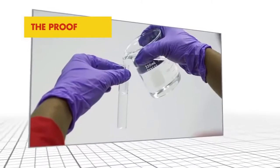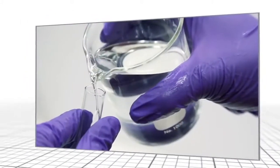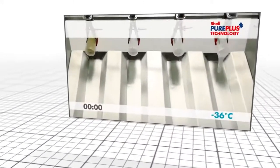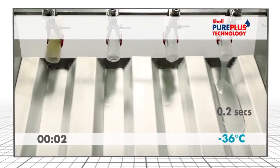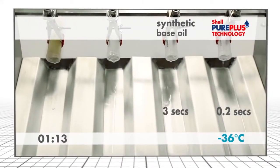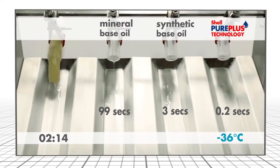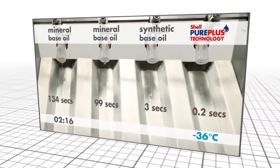Base oils created with Shell PurePlus technology have key performance advantages over those derived from crude oil. These base oils have been cooled to minus 36 degrees centigrade to assess performance at extreme low temperatures. The PurePlus technology base oil clearly demonstrates faster oil flow.